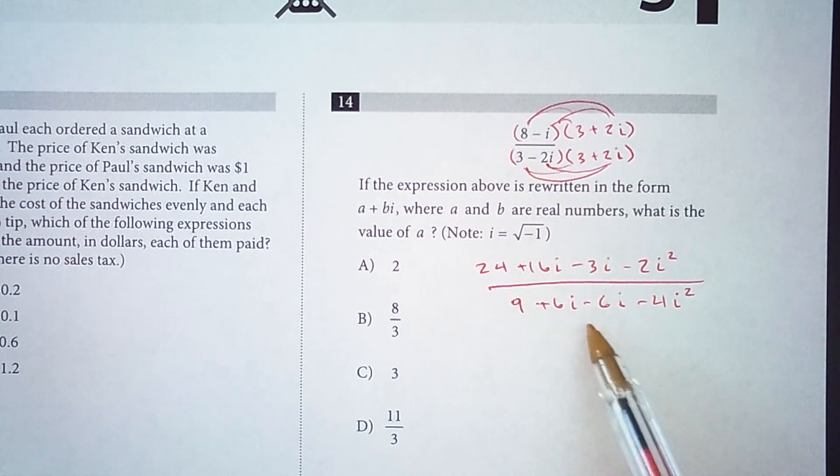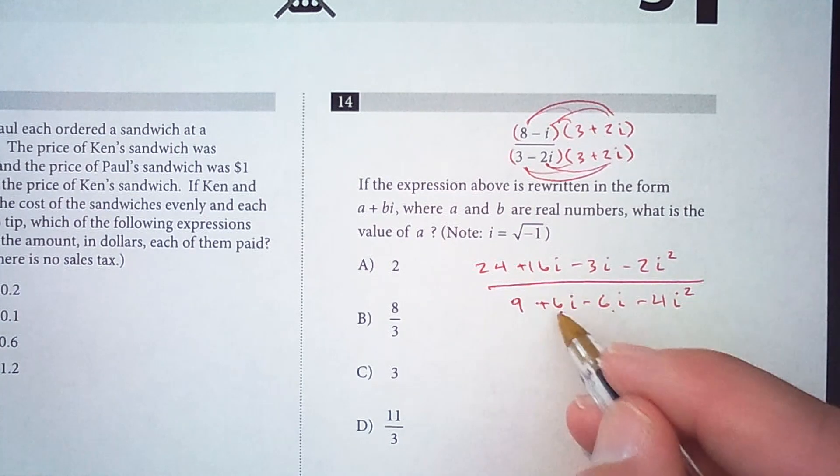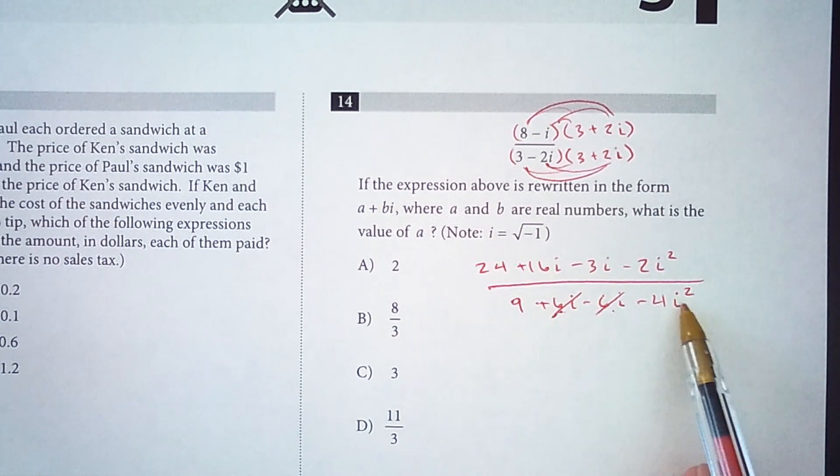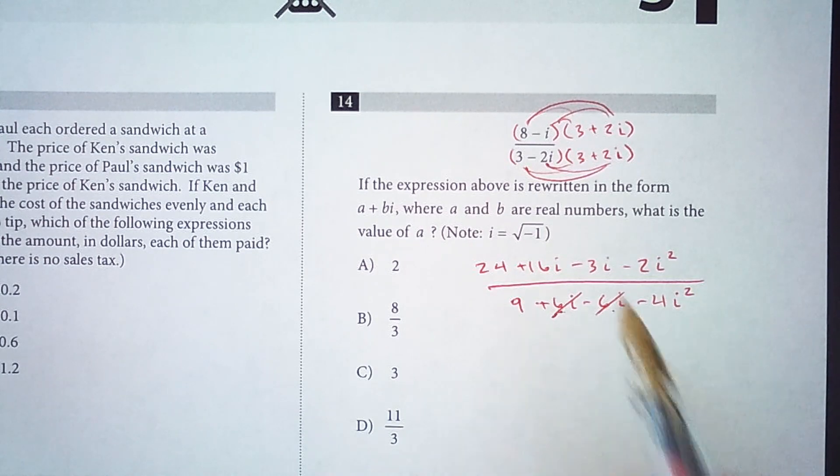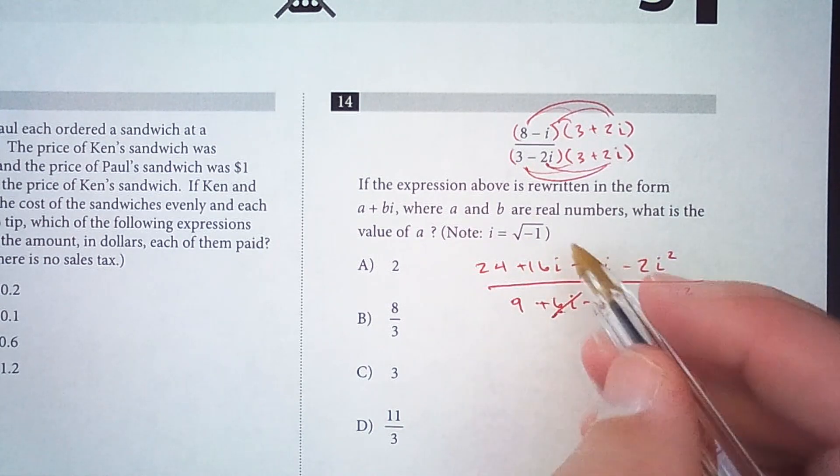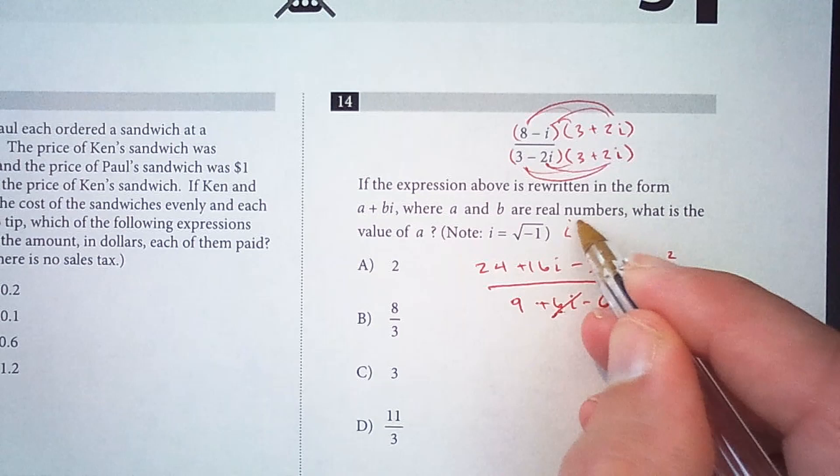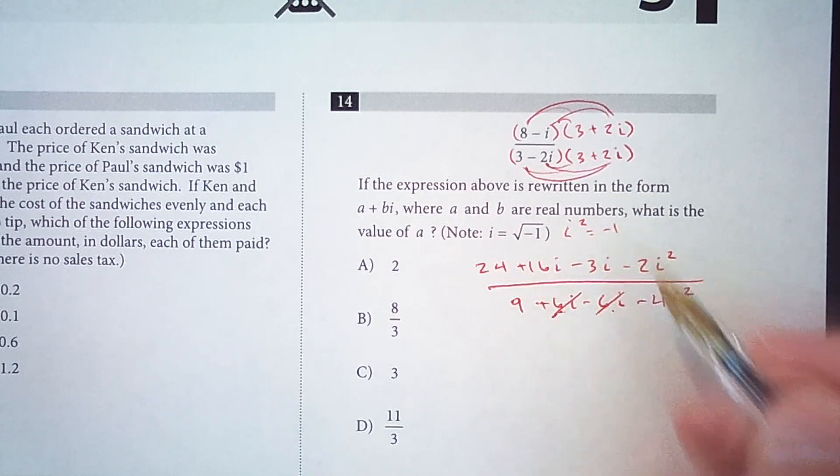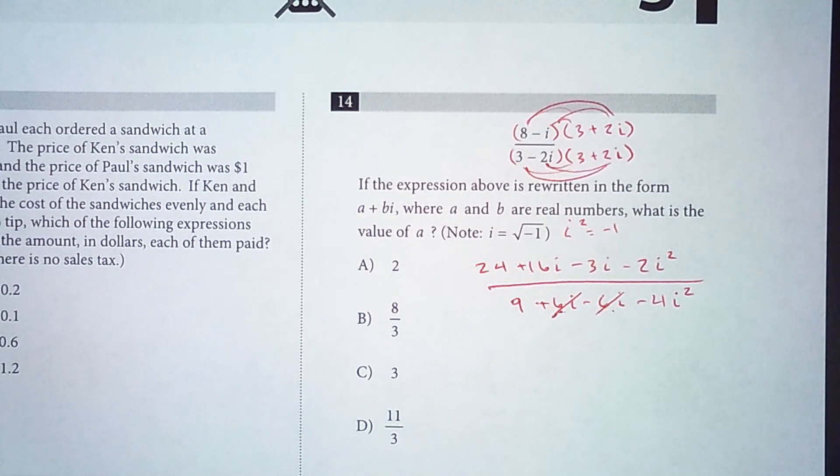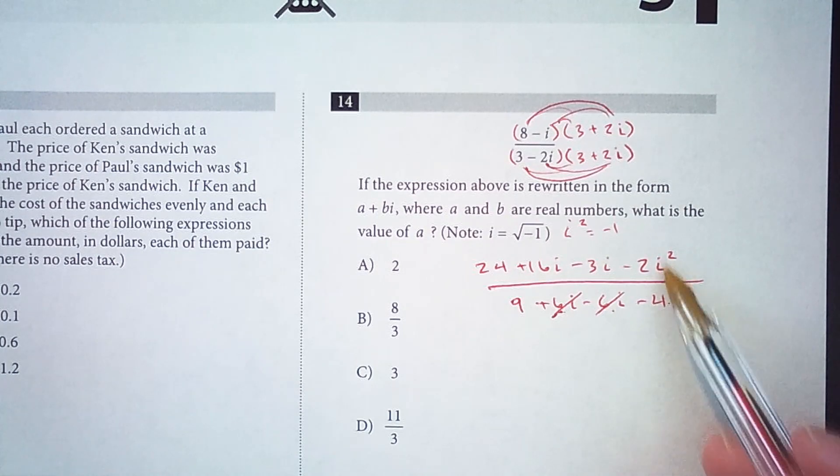Now the whole reason we multiplied by the conjugate of the denominator is that we get a 6i and a negative 6i, and those cancel. And the only other i in the denominator is i squared. If i is the square root of negative 1, then i squared equals negative 1. So we're going to use that to simplify these two terms.